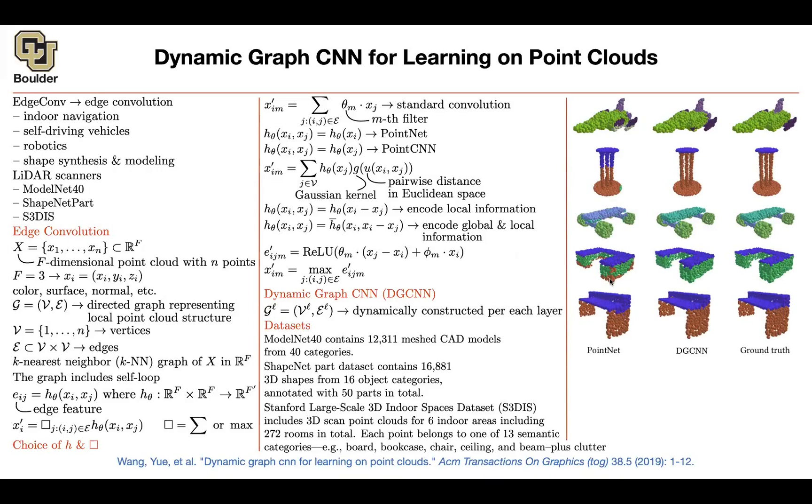This is PointNet. It's having some confusion between classes. This is DGCNN, and that's your ground truth. So it's a powerful method. The only bottleneck is dynamically constructing k-nearest neighbors.